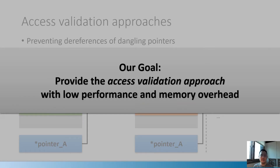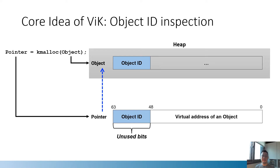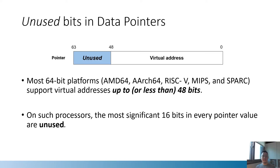In this work, our goal is to provide a practical runtime mitigation against temporal memory safety violations by employing the Access Validation approach. Our core idea is Object ID Inspection. VIG assigns a random ID to every allocated object and stores it in the unused bits of the corresponding pointer value. Then VIG inspects the pointer value before its dereference. Currently, the most significant 16 bits in every pointer value are unused for data pointers on most processors. Therefore, we believe the idea can be deployed for almost all 64-bit architecture processors.